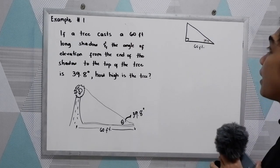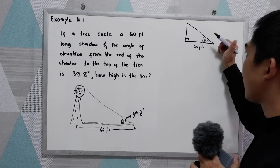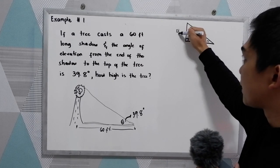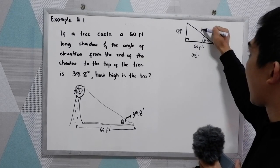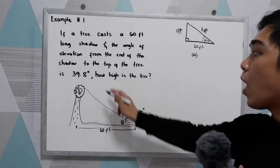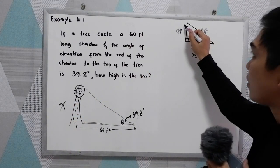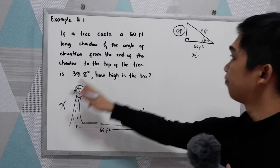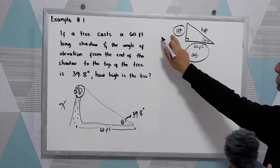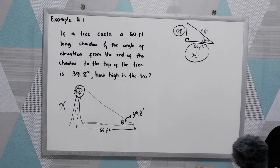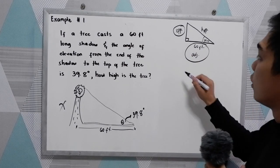After getting the right triangle, determine the opposite side, adjacent, and the hypotenuse. Since 39.8 degrees is our reference angle, the tree's height is the opposite side, the shadow (60 feet) is the adjacent side, and we have a hypotenuse. The question is how high is the tree — so our unknown X is the opposite side. Since we have opposite and adjacent, from SOH-CAH-TOA we use the tangent function.